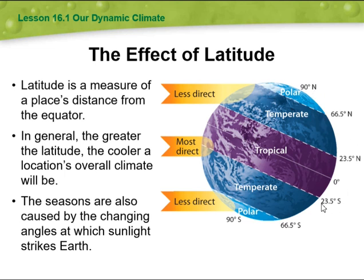Moving downwards, we also have 23.5 south in the temperate zone, and 66.5 and 90 south for the polar zones.